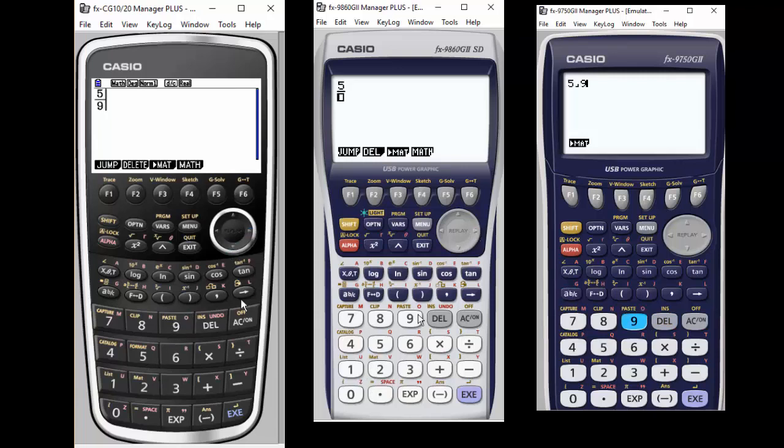Show fractions and irrational numbers in their natural display, meaning they actually look like fractions. Whereas the 9750 does not have that feature because of its memory capability. So you enter the fractions differently.